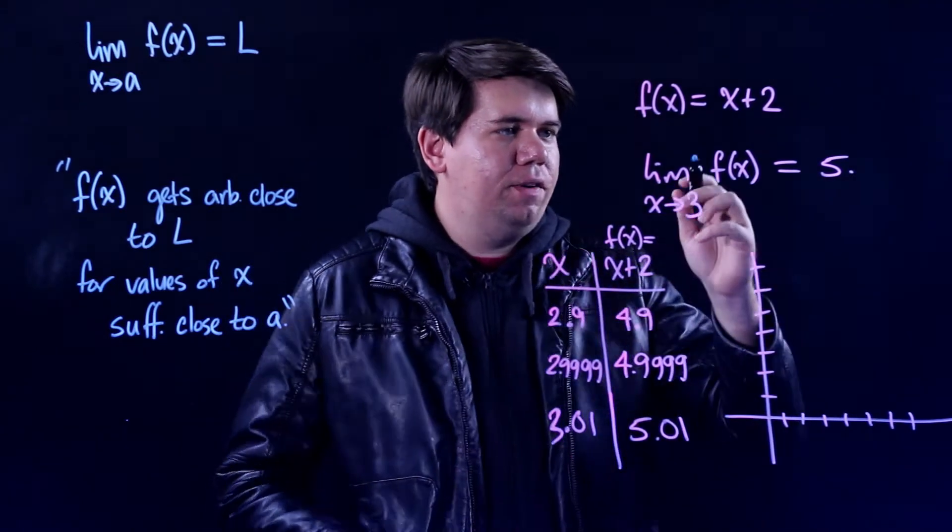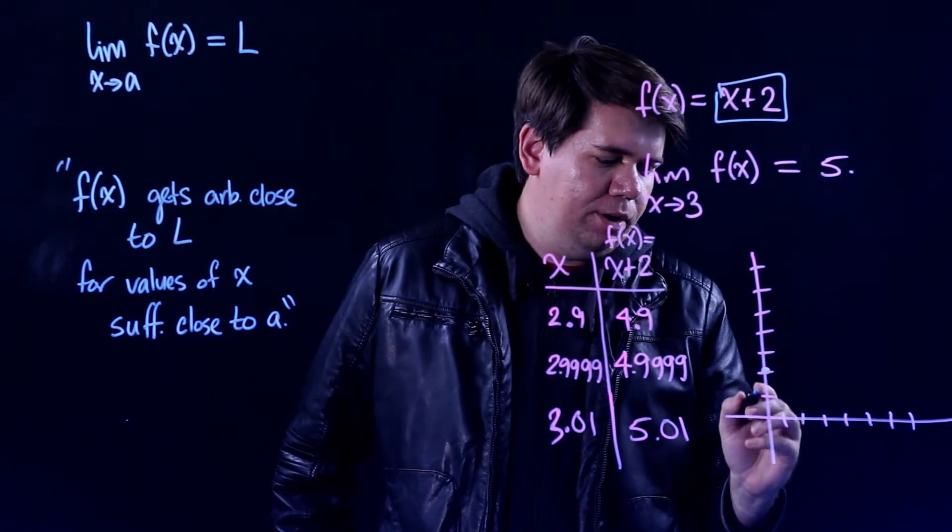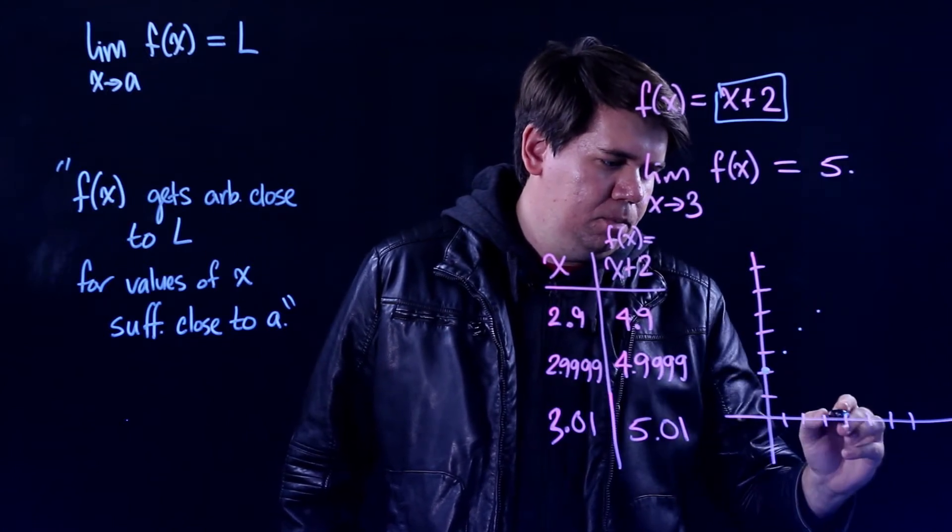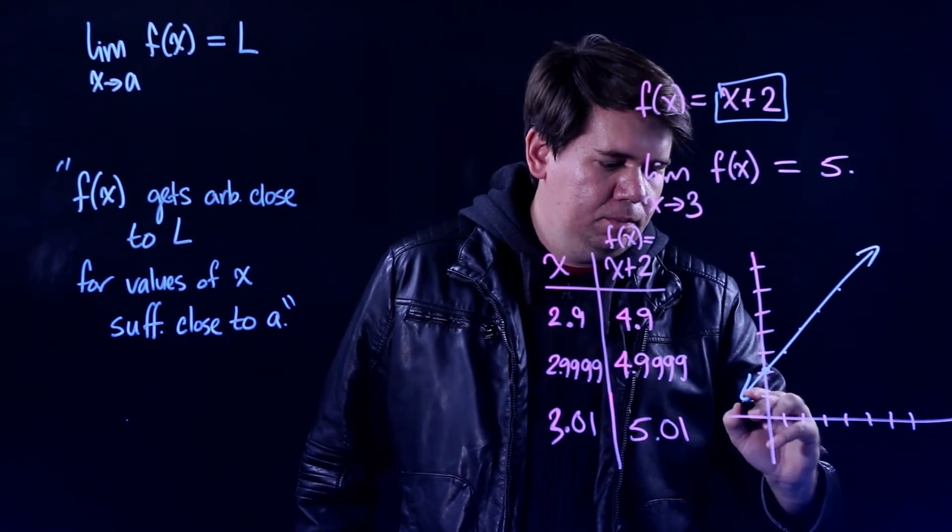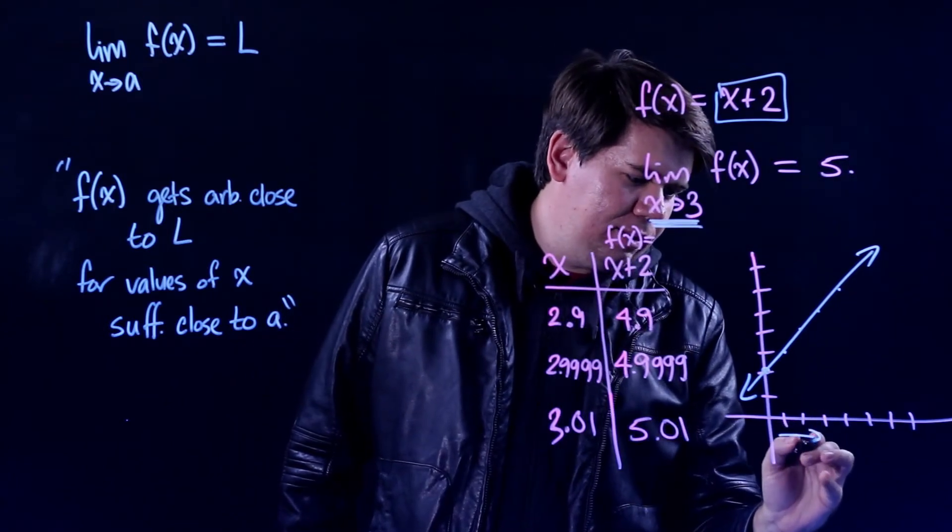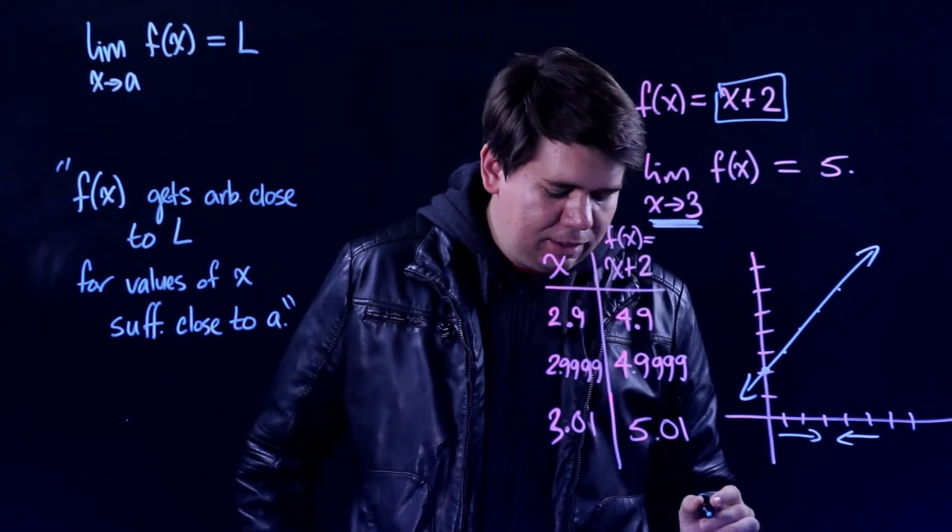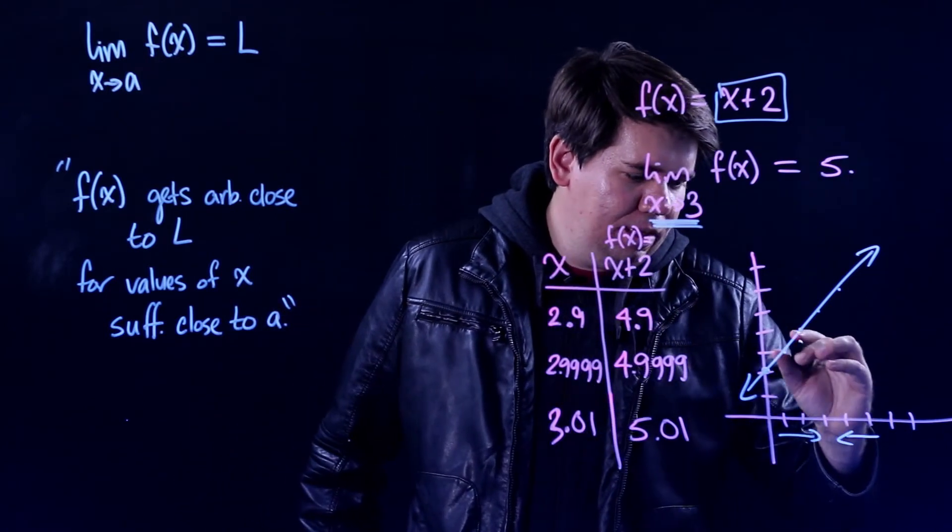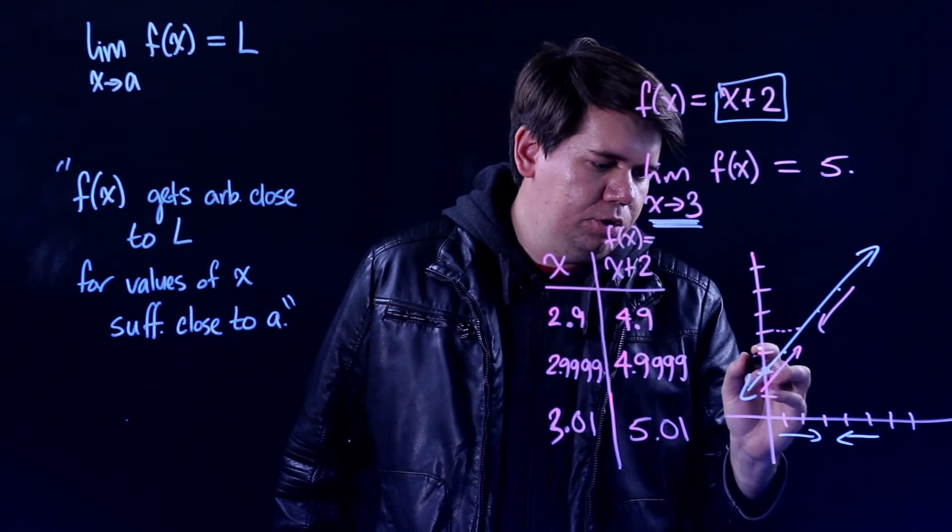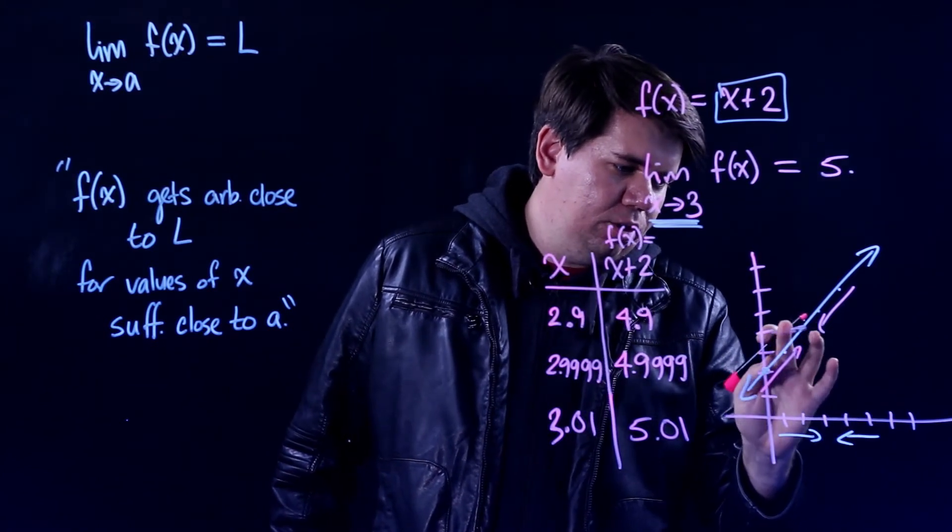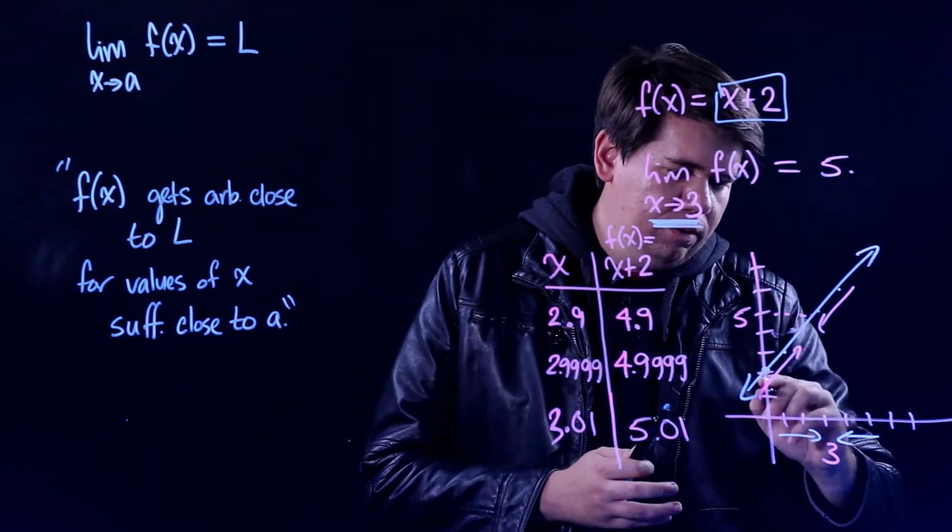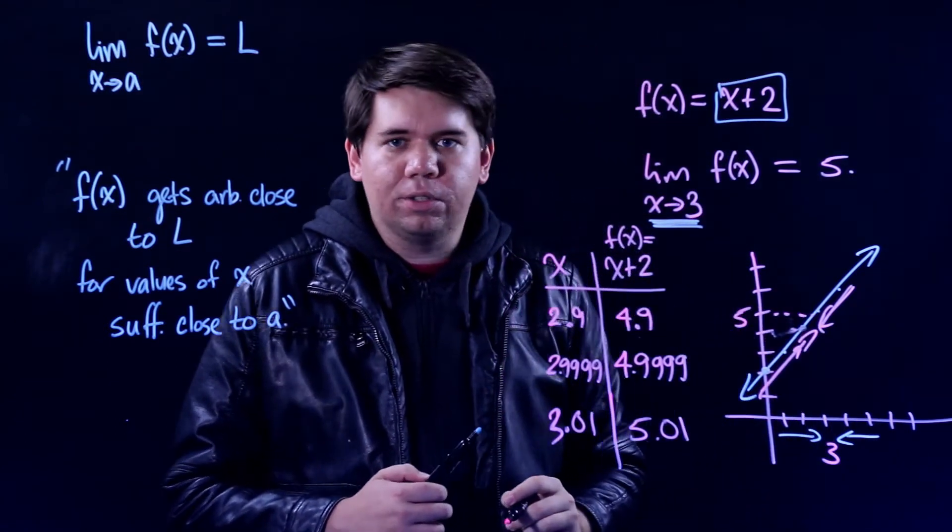So we can graph this function x plus 2. It began here at 2 and it'll go up with a slope of 1, so it looks something like this. This is saying that my x is approaching 3. So let's look what happens as my x comes closer and closer to 3. As x comes closer and closer to 3, the values on this function are getting closer and closer to 1, 2, 3, 4... I must have drawn this off... gets closer and closer to 5. So as I get closer to 3, the values of my function are getting closer to 5.